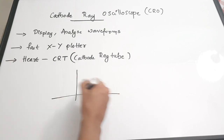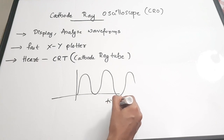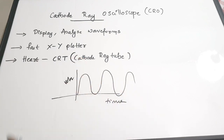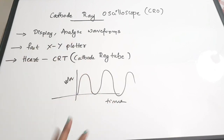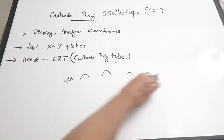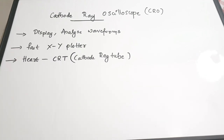Just like this, if you are representing a waveform, the X axis will have time and the Y axis will have voltage or amplitude levels. It can also plot one signal with respect to another signal. The heart of the CRO is called the CRT or cathode ray tube, which plays the role of displaying the waveform or signals.